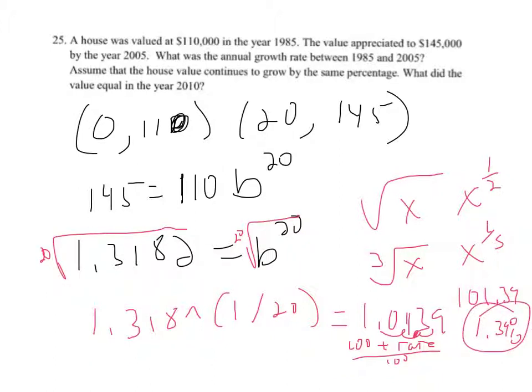So our B, this number here is our B, and that's what's going to go into our equation. And then we'll have the 110, so I'm going to get y equals 110 times 1.0139 to the x power. So that's our equation.